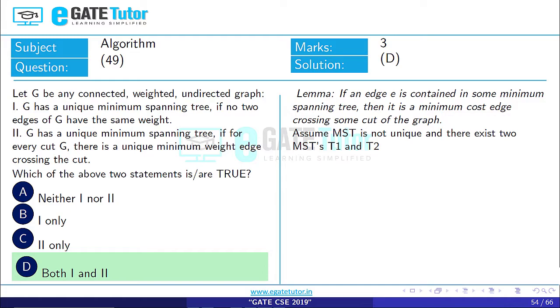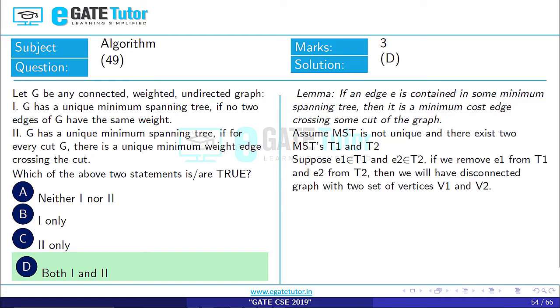Let's assume the MST is not unique and there exist two MSTs, T1 and T2. Suppose edge E1 belongs to T1 and edge E2 belongs to T2. If we remove the E1 edge from T1 and E2 edge from T2, then we will have a disconnected two set of vertices V1 and V2 in T1 and V1 and V2 in T2.